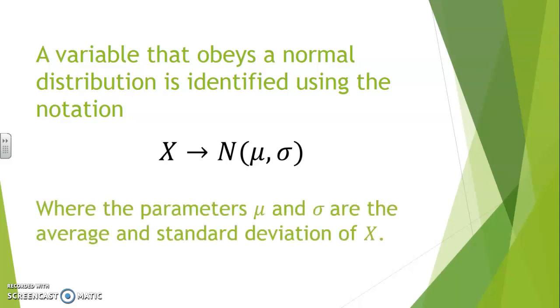You've probably guessed that parameters mu and sigma will refer to the normal variable's average and standard deviation, respectively.